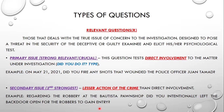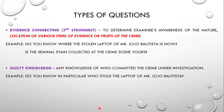Another is the evidence connecting question, the third strongest type we can formulate during polygraph examination. It is used to determine the examinee's awareness of the nature and location of various items of evidence or fruits of the crime. Example: 'Do you know where the stolen laptop of Mr. Bautista is now?' or 'Is the seminal stain collected at the crime scene yours?' Another type is guilty knowledge — knowledge about the crime committed under investigation. Example: 'Do you know in particular who stole the laptop of Mr. Bautista?'